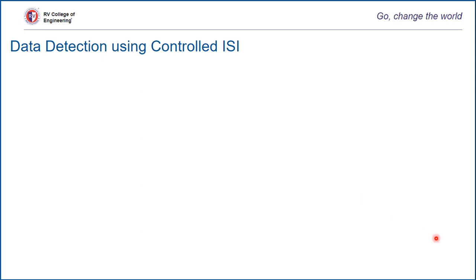Hello everyone. Welcome to another video lecture on signal design using controlled ISI. In the last video, we saw duobinary coding with pre-coding and without pre-coding. This is about data detection. In the last video lecture, we saw how it can be expressed mathematically and we'll try to analyze conceptually. Let's take particular cases.